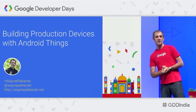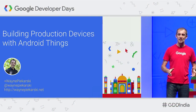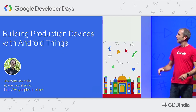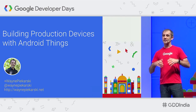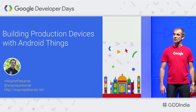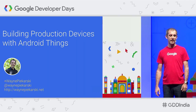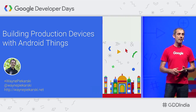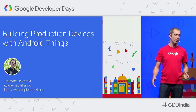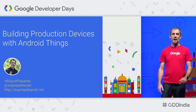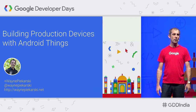Welcome to day two. My name is Wayne Pukarski, and today I'm going to be talking about how to build production devices for Android Things. Android Things is designed for making IoT devices. We've got a big sandbox area in the other room that you can go and check out our demo, so definitely come and see us later on. We're here to educate you about what we're doing, but also to find out more about what kinds of cool projects you want to build.